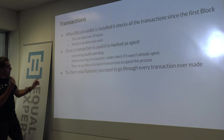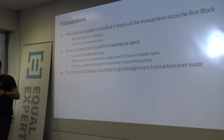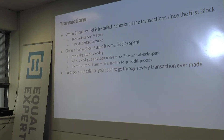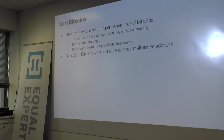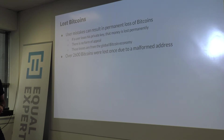In theory, to check your balance you'd need to go through every transaction ever made, but since we know where we started it's manageable. We don't have a balance in Bitcoin — we need to traverse the transaction chain back to our starting point. If you download the whole transaction chain, it's updated roughly every ten minutes as new blocks are mined.